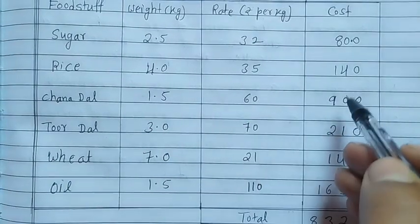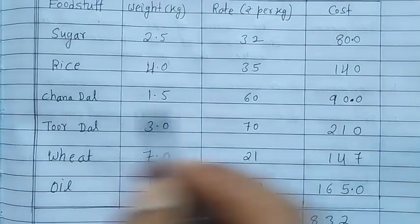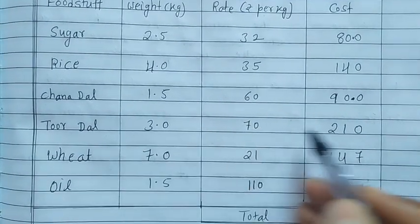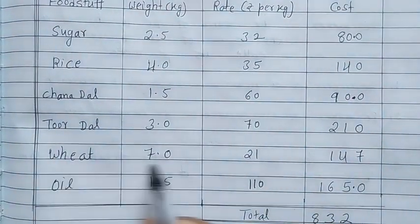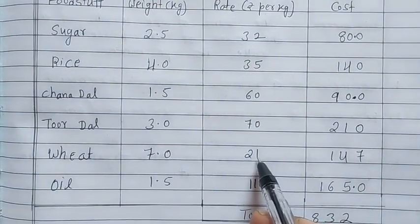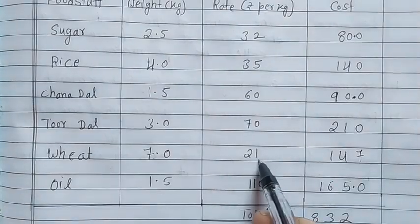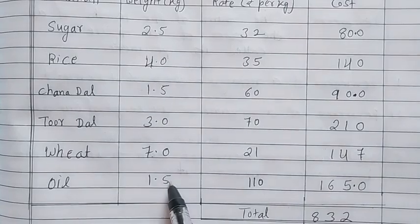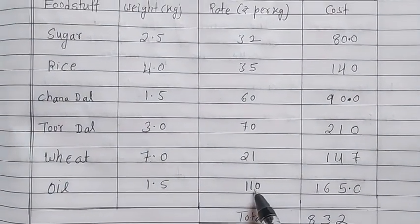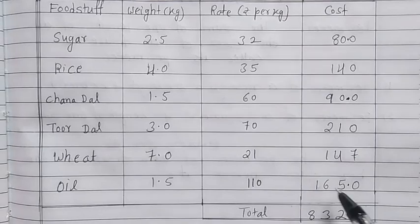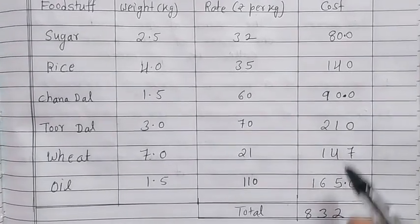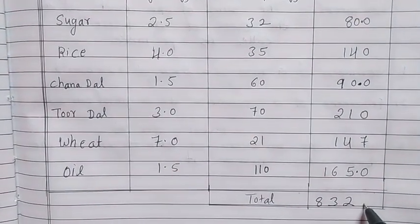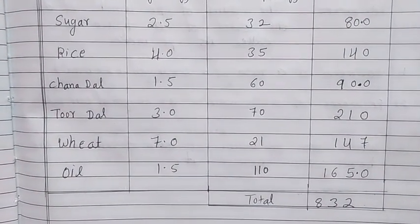Chana dal: 1.5 kg at ₹60 per kg = ₹90. Tur dal: 3 kg at ₹70 per kg = ₹210. Wheat: 7 kg at ₹21 per kg = ₹147. Oil: 1.5 kg at ₹110 per kg = ₹165. Adding all items together gives a total bill of ₹832. Thank you very much.